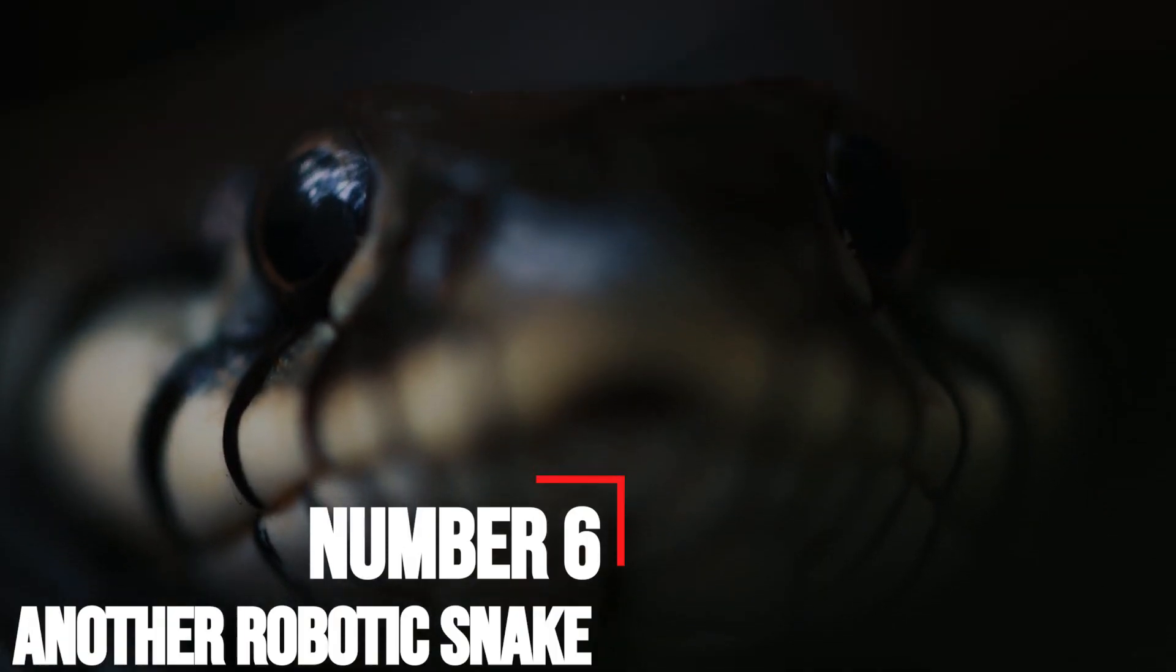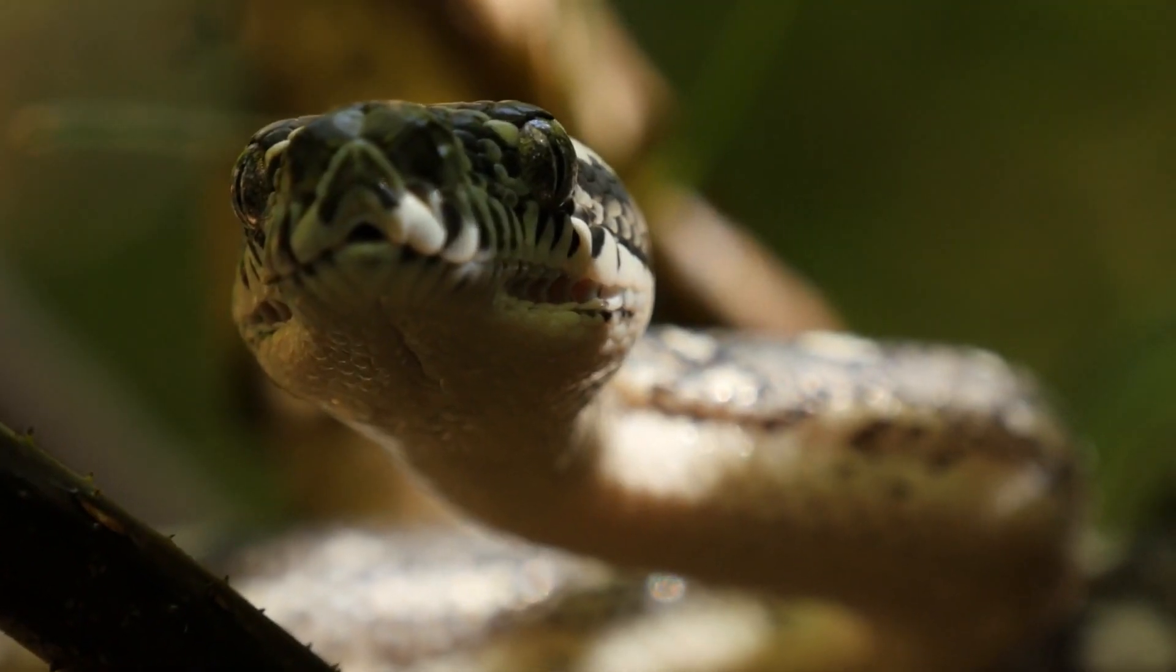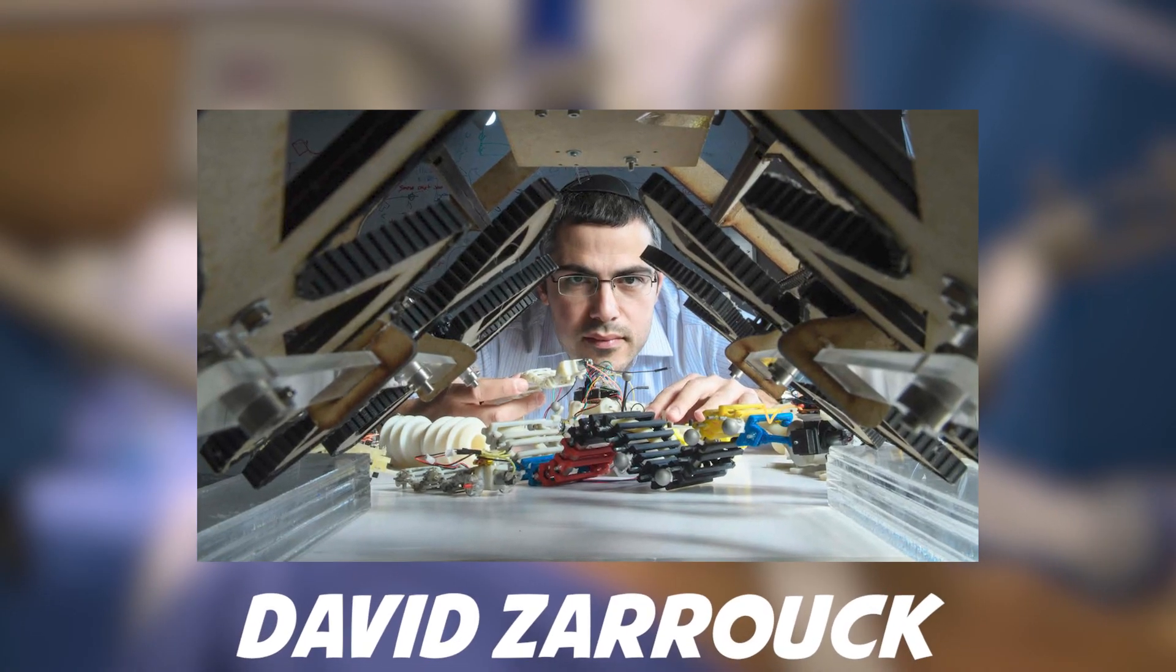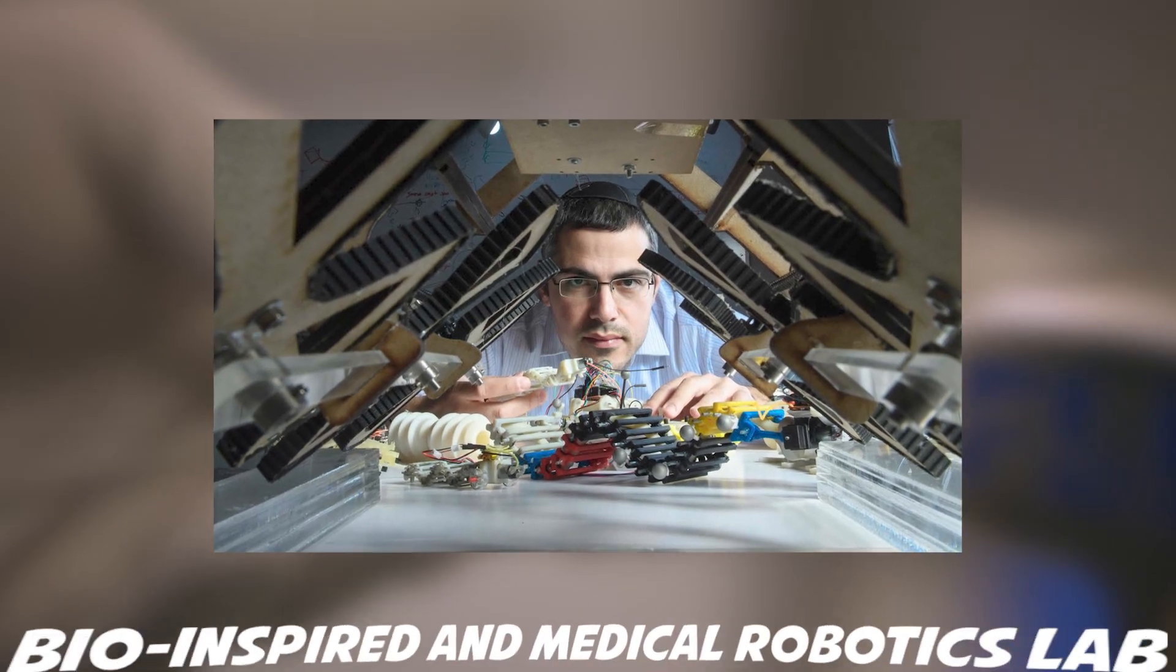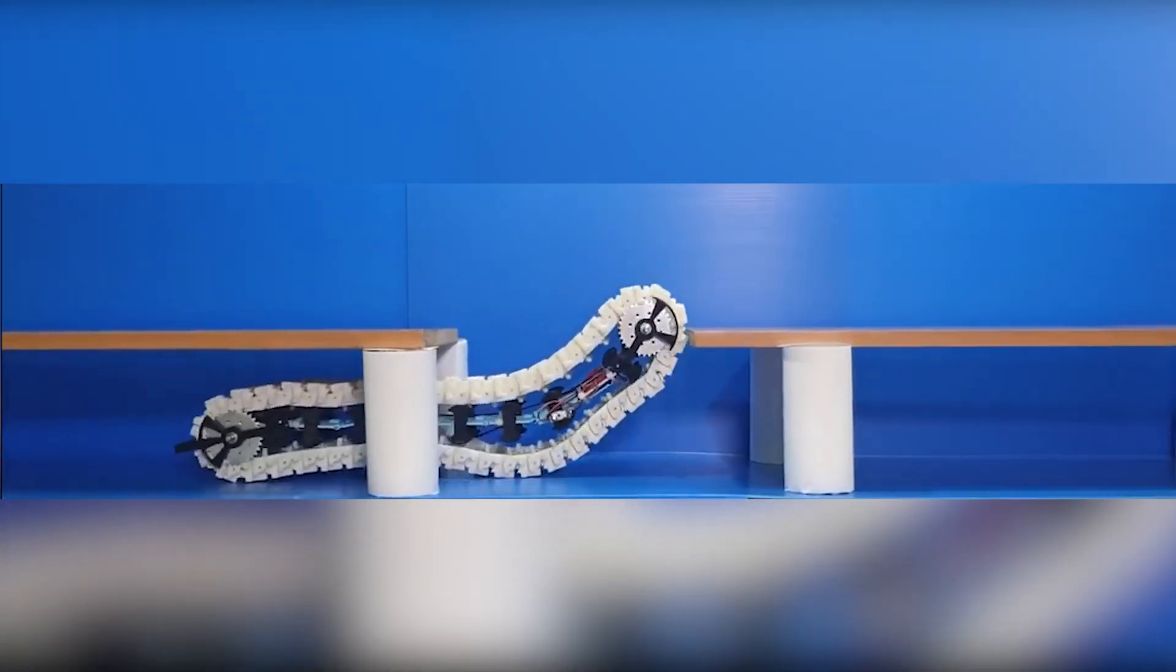Number six, another robotic snake, but for space. Snakes are a popular animal inspiration for Israeli-designed robots. David Zarouk, head of Ben-Gurion University of Negev's bio-inspired and medical robots lab, has developed a minimally-articulated serial robot.